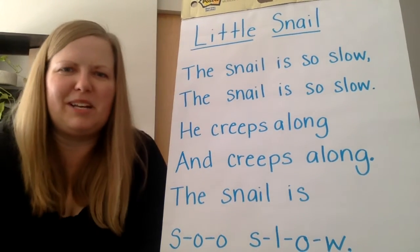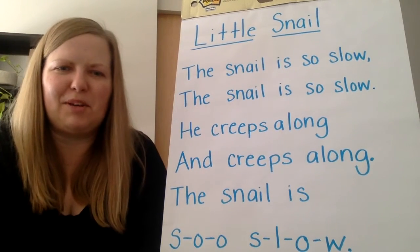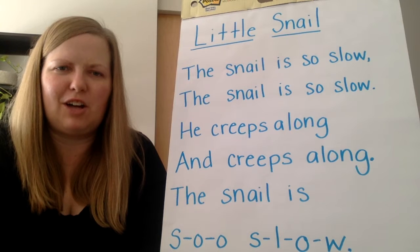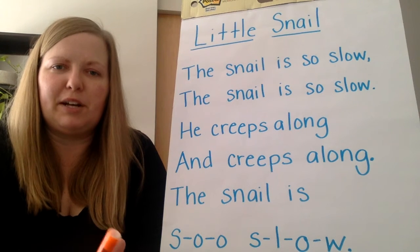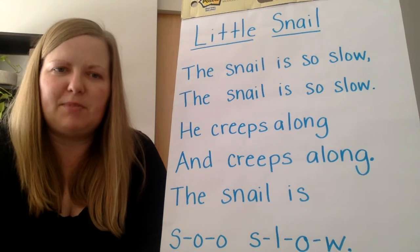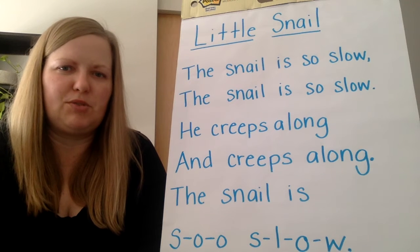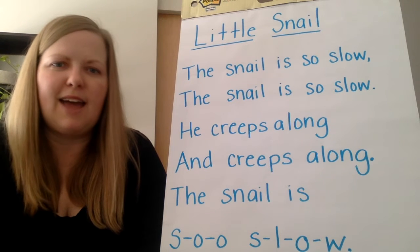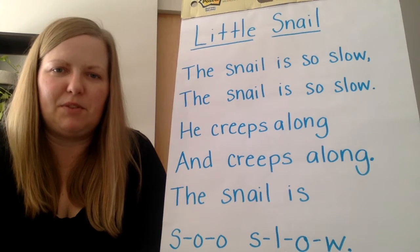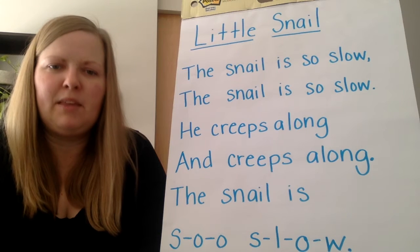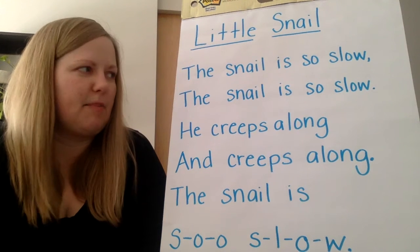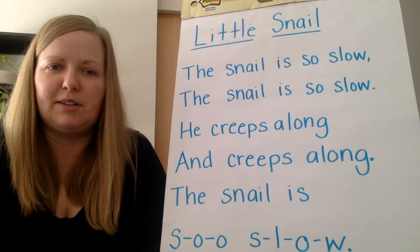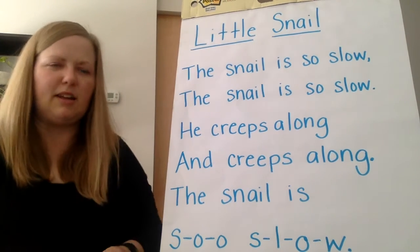Hi kinder friends! Ms. Schmidt here. I thought we could read a poem together called Little Snail. We're gonna read it two times. The first time I'm going to read it to you, and then the second time I would love it if you could read along with me. After we have read it twice, I'm gonna go through and circle the sight words that I find. So here we go.